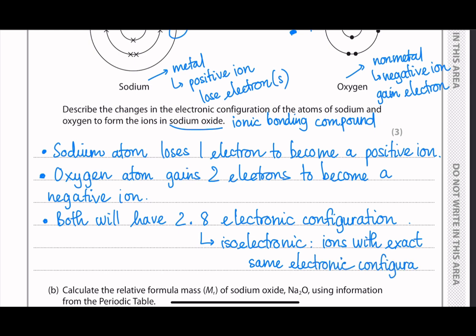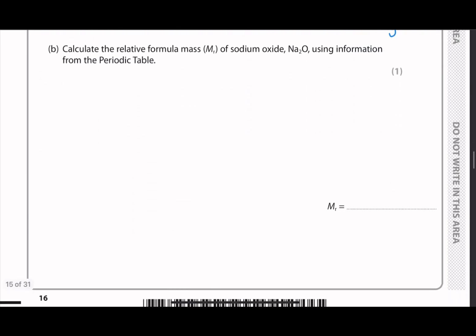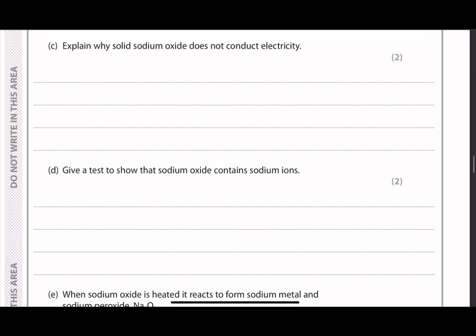So then the next question asks to calculate the relative formula mass of sodium oxide using information from the periodic table. So then we get the atomic mass of sodium is equal to 23, and the atomic mass of oxygen is 16. So then we have two sodium plus one oxygen equal to 62, and there's no unit because it's relative.